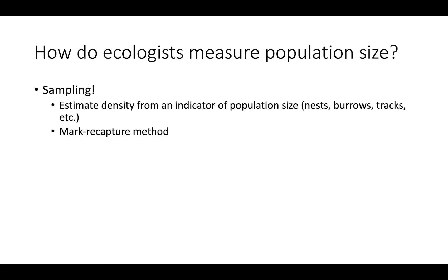The second method is mark and recapture. In mark and recapture, they'll catch organisms and mark them somehow, then release them back into the environment and wait however long they want — a couple days, a couple weeks — and then go out and try to catch organisms again. Based on the proportion of marked individuals in that second capture, they can extrapolate what the overall size of the population probably is.